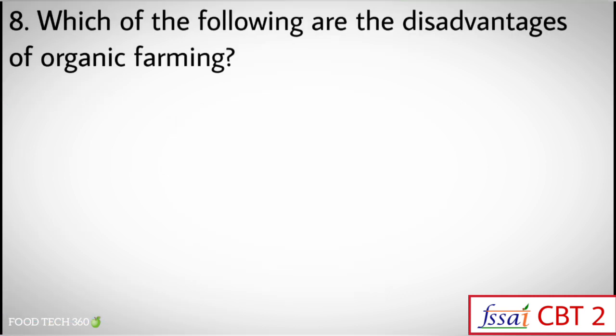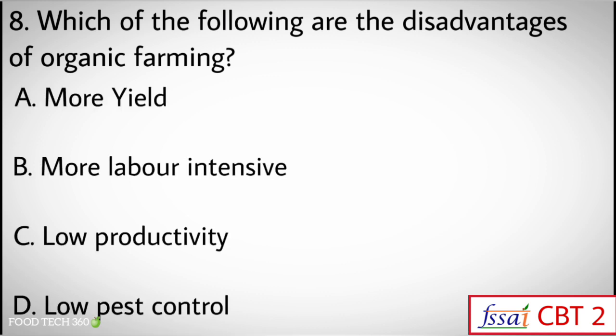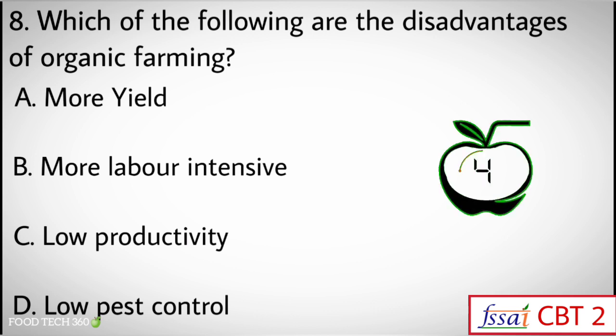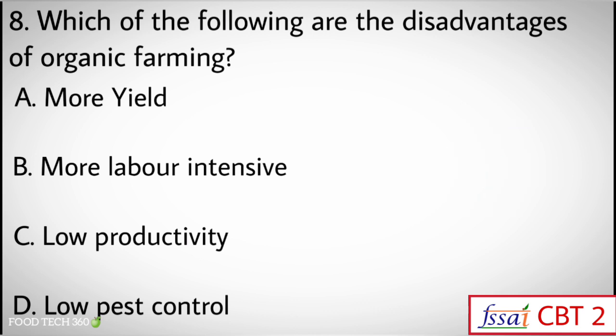Question number 8: Which of the following are the disadvantages of organic farming? Options: A) More Yield, B) More Labor Intensive, C) Low Productivity, D) Low Pest Control. Correct answers: B) More Labor Intensive, C) Low Productivity, and D) Low Pest Control.